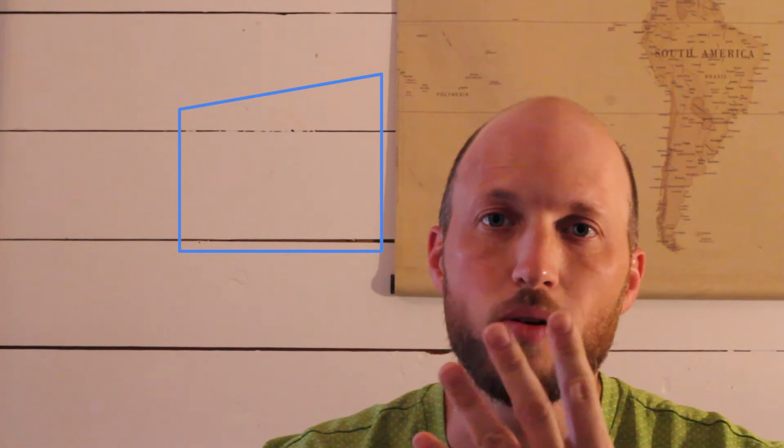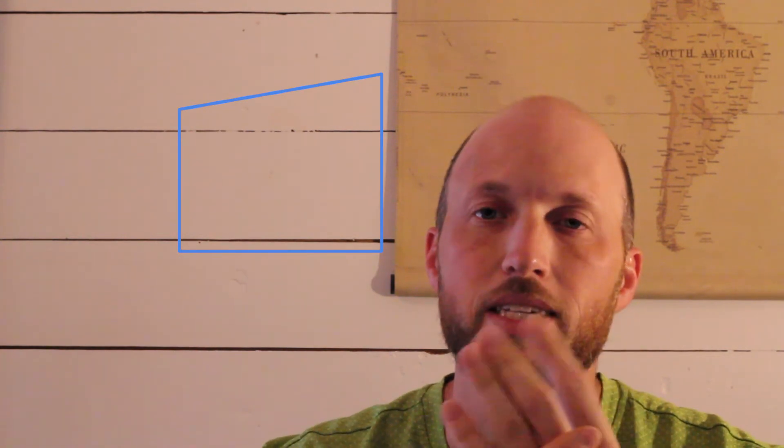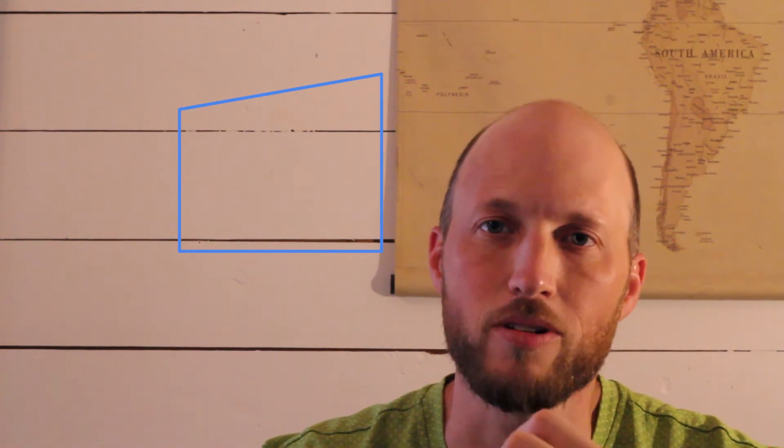First of all, all quadrilaterals are a polygon. So what is a polygon? A polygon is a closed shape with straight sides. Is a circle a polygon? No, a circle is not a polygon because it does not have straight sides. Now, 'quad' means four, so a quadrilateral is going to have four sides. Anything with four straight sides is a quadrilateral.